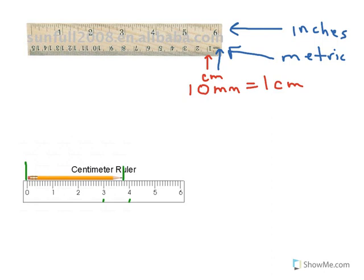And we can count divisions to actually write it as a decimal. And in this case, there's 1, 2, 3, 4, 5, 6, 7 lines. So that means that that pencil is 3.7 centimeters.